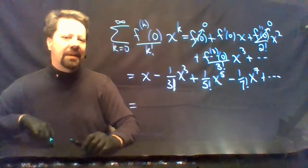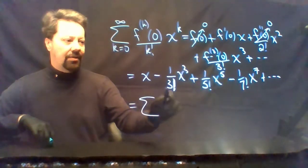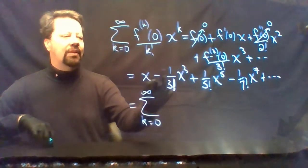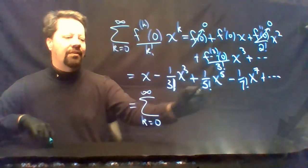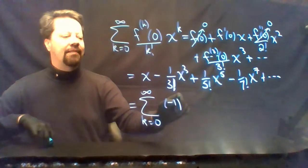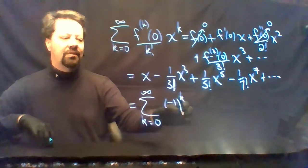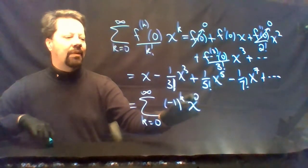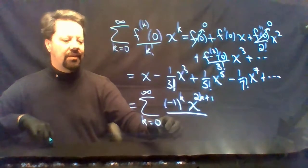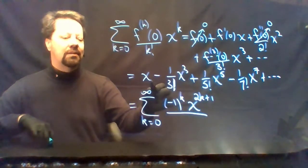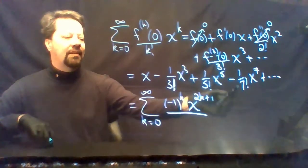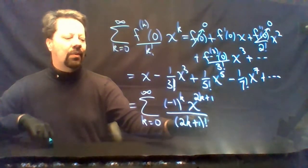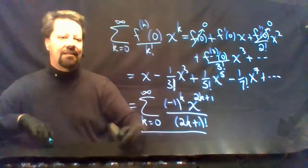The Maclaurin series for sine is alternating plus, minus, plus, minus, with only odd powers and odd factorials. To get alternation, we use negative 1 to the power k. Starting at k equals 0 gives a positive sign. To get only odd powers, we write 2k plus 1 — when k equals 0, x to the 1; when k equals 1, x cubed; and so on. The denominator is 2k plus 1 factorial. This is the Maclaurin series for the sine function.